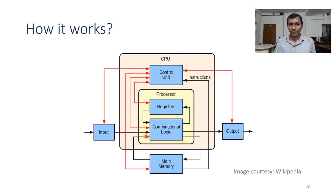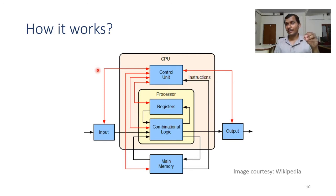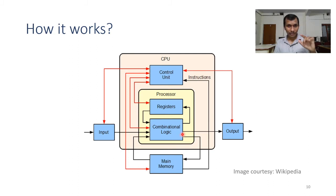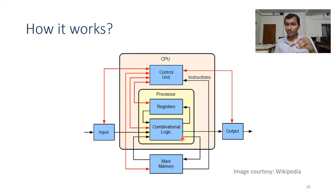Coming back to our input-process-output logic: how is a value accepted by the computer? To provide an input value, first we need to get the approval of the CPU. Inside the CPU there is a unit called the Control Unit. This unit produces a control signal when the CPU is ready to accept input. When the control signal is available and input is ready, that value is fed into the CPU and stored either in a register or in main memory. The stored value can then be used for further processing, and after processing the output is stored into a register or memory, then transferred to an output device such as a monitor.